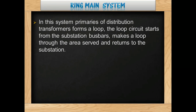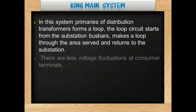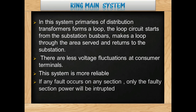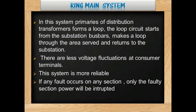Coming to the ring main system: In this system, the primaries of distribution transformers form a loop. The loop circuit starts from the substation bus bars, makes a loop through the area served, and returns to the substation. There are less voltage fluctuations at consumer terminals, and this system is more reliable. If any fault occurs on any section, only that faulted section's power will be interrupted.